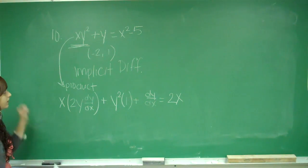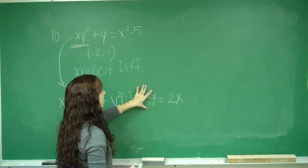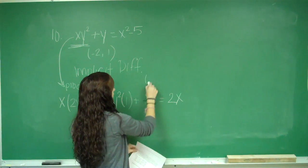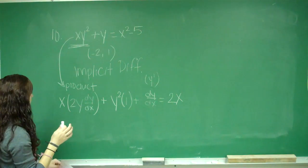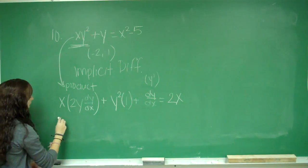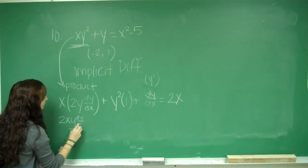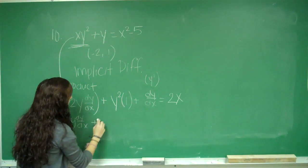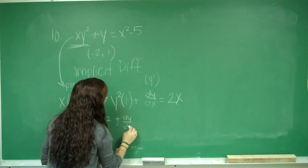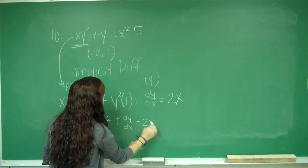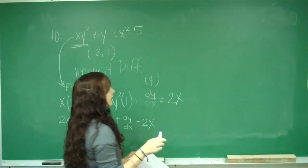So this is implicit differentiation because there's y's and x's. When I take the derivative of y, I write dy/dx, or you can write this y prime. So I'm going to multiply this out, so I'm going to get 2xy dy/dx plus y² plus dy/dx equals 2x. So now you want to get dy/dx on one side of the equation. Your goal is dy/dx on one side.